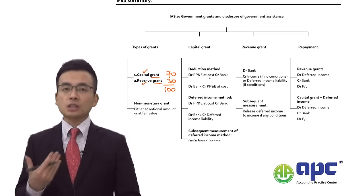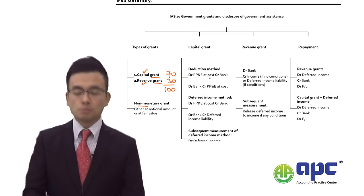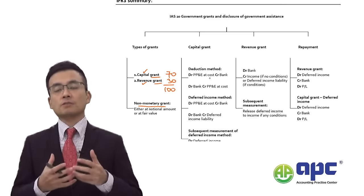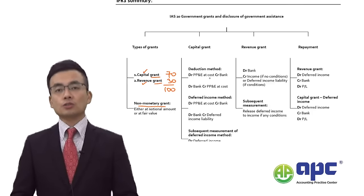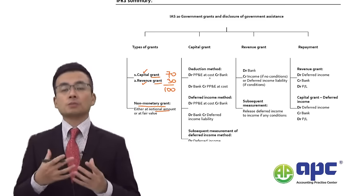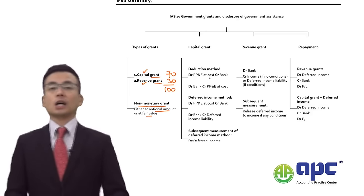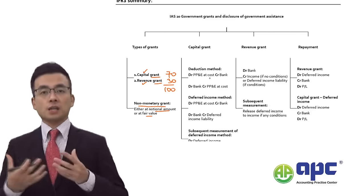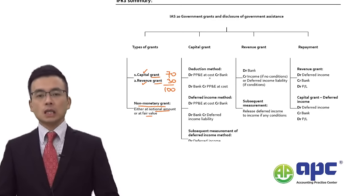If the government gives you a non-monetary grant — for example, a green certificate that you can resell to third parties — under IAS 20, you have two accounting policy choices: recognize the certificates at notional amount (usually $1) or at fair value, benchmarked against market prices. You can bring those certificates into your inventory on the SFP at fair value.